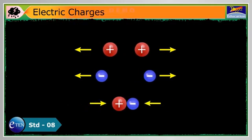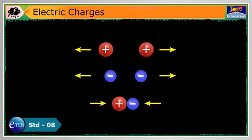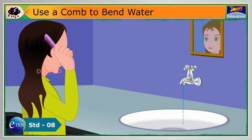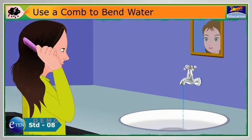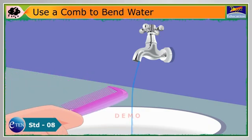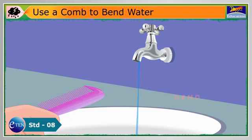Opposites attract and likes repel. Turn on your faucet, only let a very thin stream of water flow. It needs to be a smooth stream, not one that breaks up. Take a plastic comb and rub it through your hair, then hold your comb close to but not touching a small stream of water coming from the faucet.